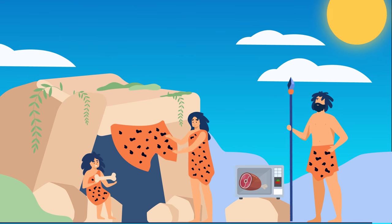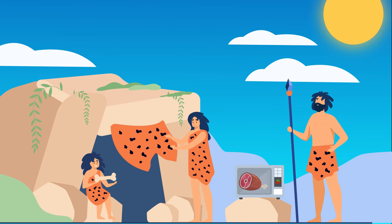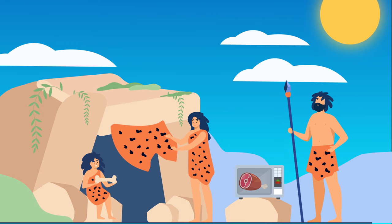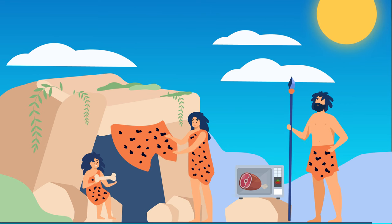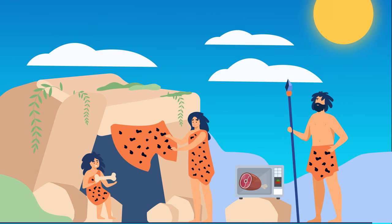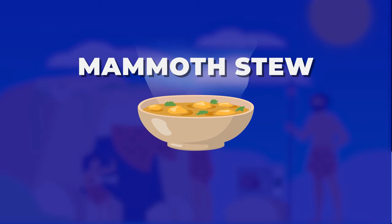Imagine how happy our Stone Age ancestors would have been if they'd have had a microwave oven to cook their food. Just by pressing a few buttons and setting the right temperature, they could have a mammoth stew in a minute or two.